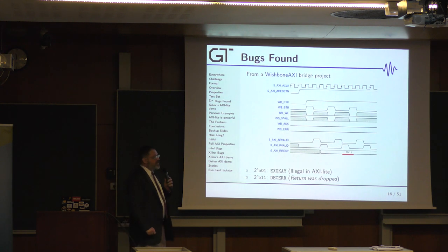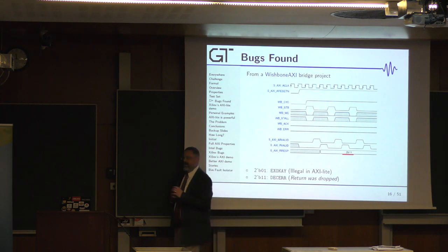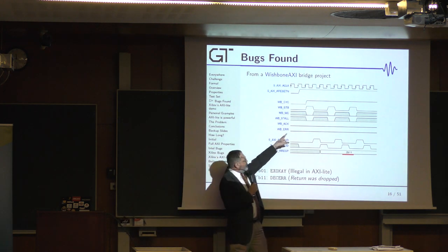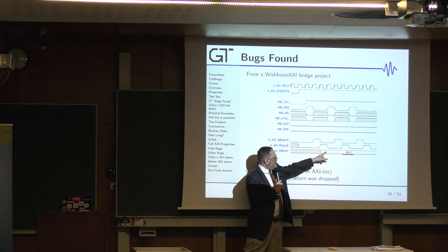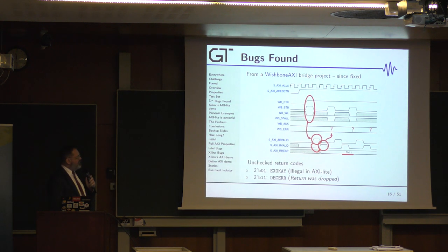Here's another example from a Wishbone AXI project. In this case, the user checked for two types of responses. He checked for whether you had an okay response or a slave error response. This is a Wishbone. So we start with a Wishbone request. We then get to an AXI request, an AXI response. But if it was a decode error response, he never returned anything back to the Wishbone bus. And so here you have again. Now this time, the Wishbone bus is going to hang waiting for a response that will never come. The neat thing about Wishbone is you can at least do a bus abort and start over.